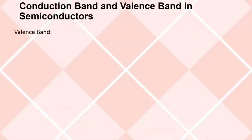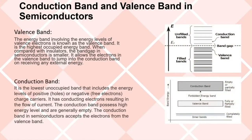Conduction band and valence band in semiconductors: The valence band is the energy band involving the energy levels of valence electrons. It is the highest occupied energy band. Compared with insulators, the band gap in semiconductors is smaller, allowing electrons in the valence band to jump into the conduction band upon receiving external energy. The conduction band is the lowest unoccupied band, including energy levels of positive holes or negative free electrons. It has conducting electrons resulting in current flow. The conduction band possesses high energy levels and is generally empty, accepting electrons from the valence band.